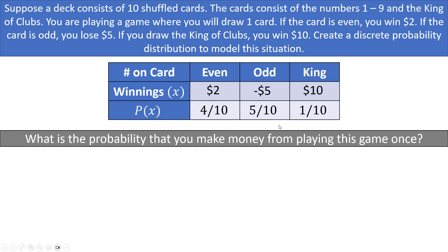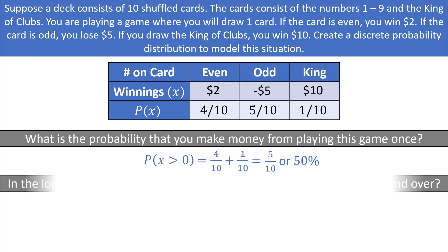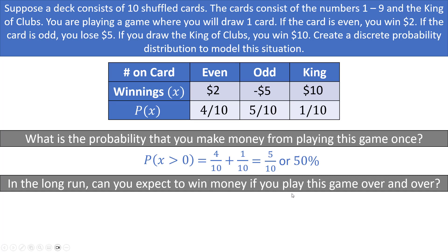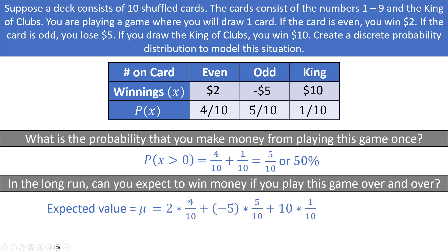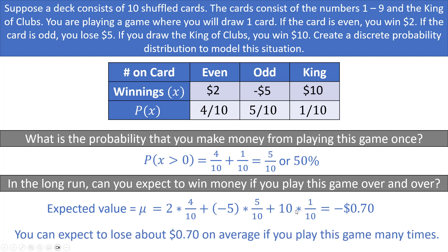What is the probability of making money from this game? That's P(X > 0), which includes drawing an even card or the King of Clubs: 4/10 + 1/10 = 5/10 = 50%. In the long run, can you expect to make money? The expected value is (2)(4/10) + (−5)(5/10) + (10)(1/10) = −$0.70. You can expect to lose about 70 cents on average per game.